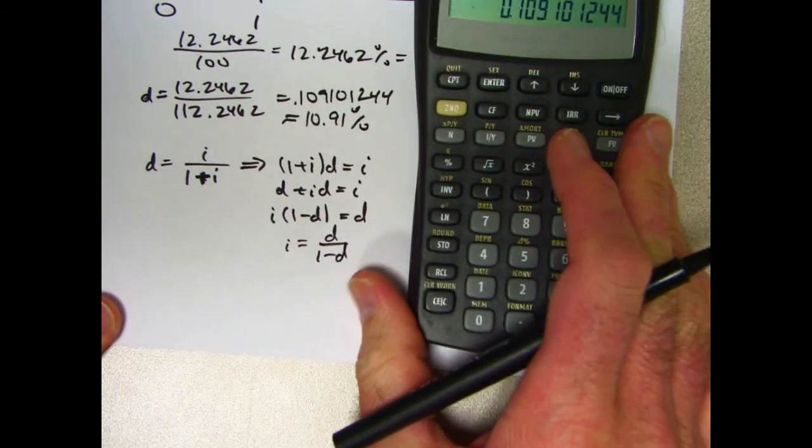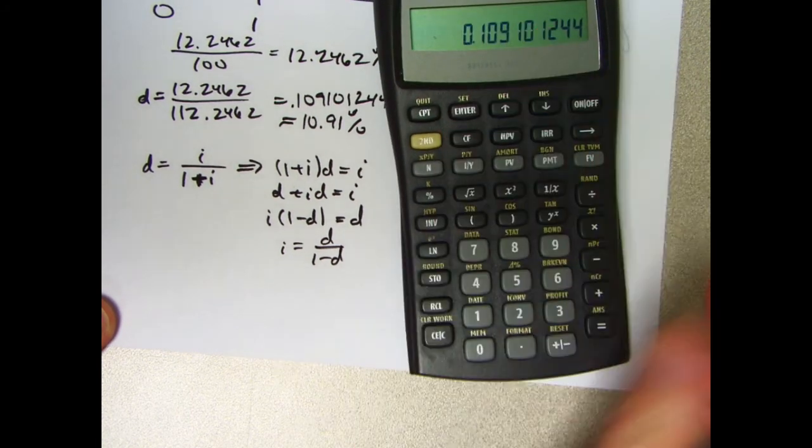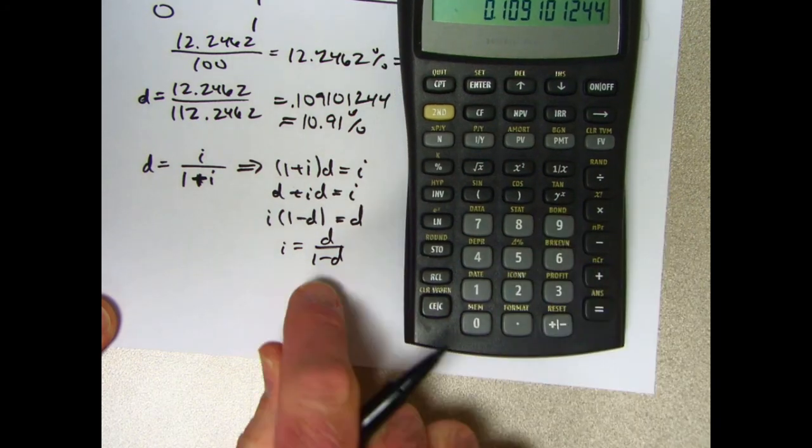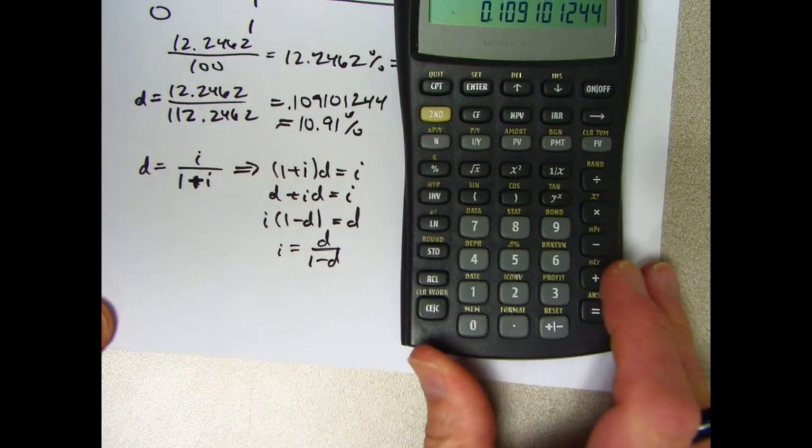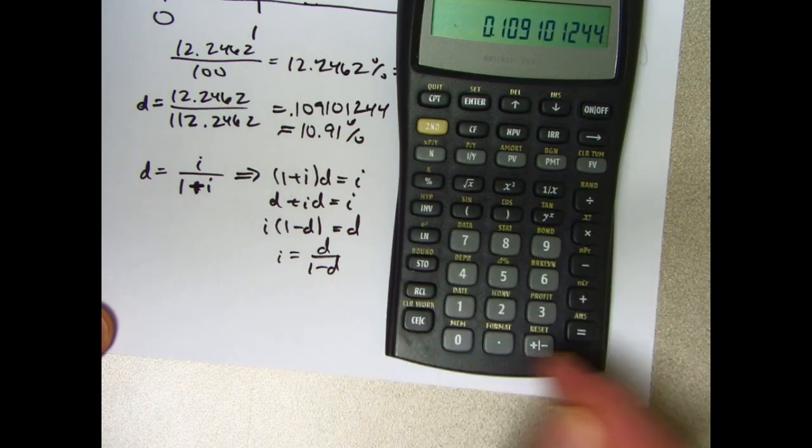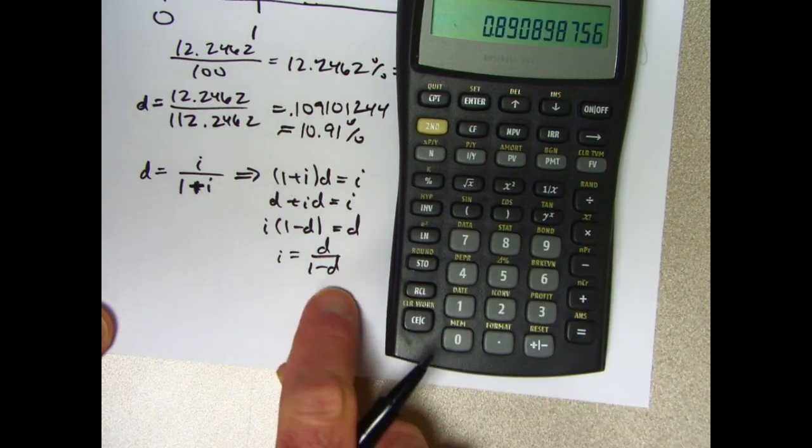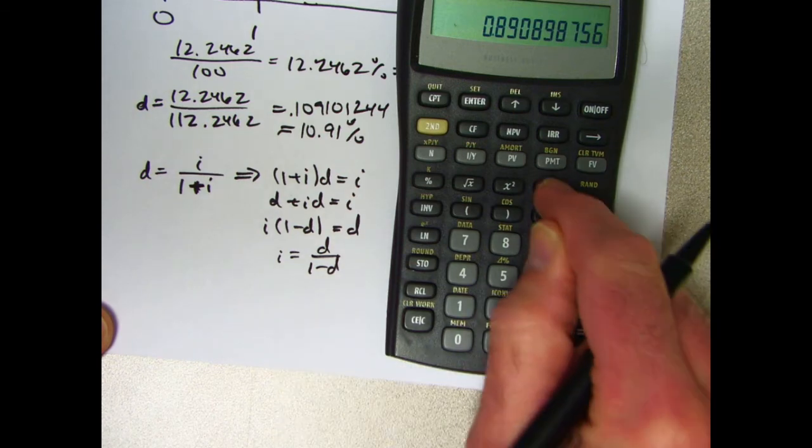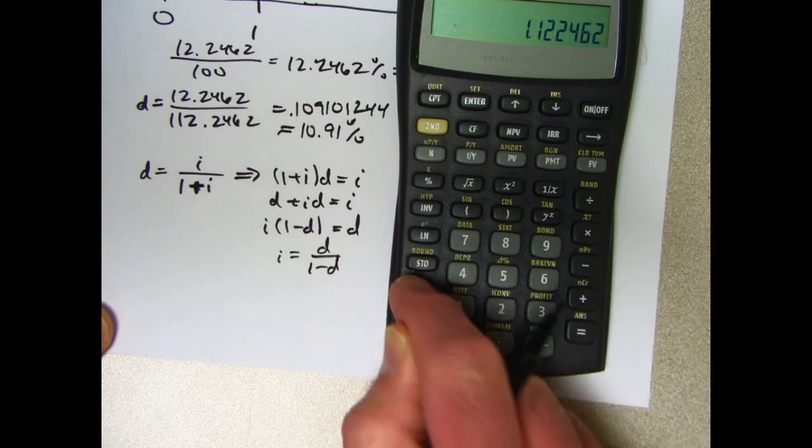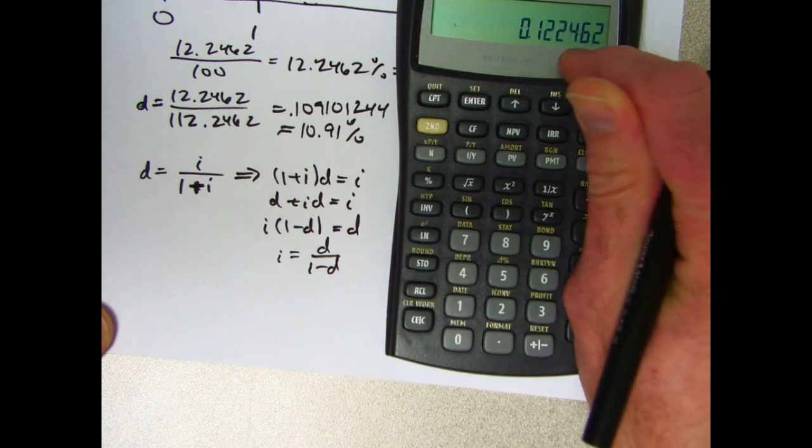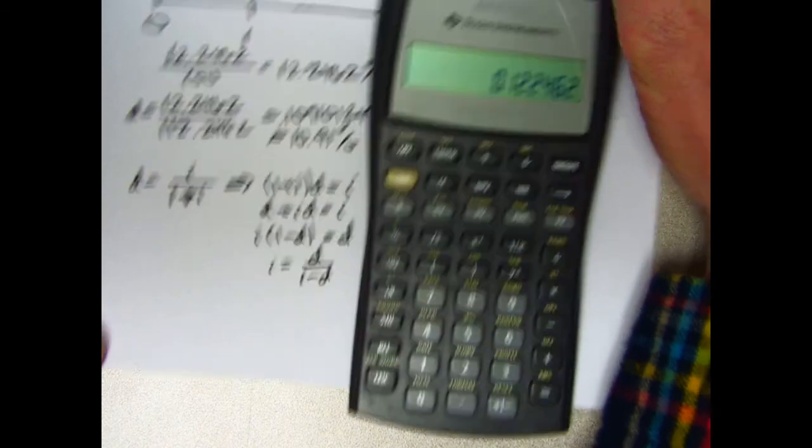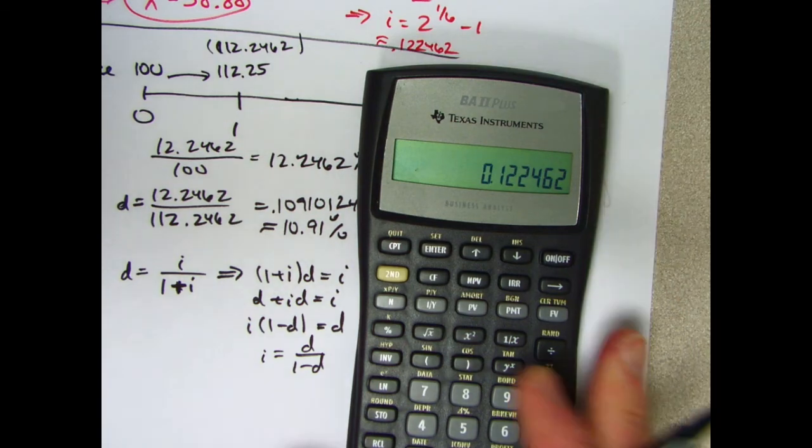Let's see here. So let's confirm that. So here is d now, again 0.1091. Store that now in register 0. Let's use this equation to confirm that we get back to i. If I take 1 minus what's in register 0, that's on the bottom. We're going to divide by that, so take its reciprocal and multiply times d, what's in register 0. And we do get i back again, 0.122462. Oops, can't quite see that right there. That is the matching i.